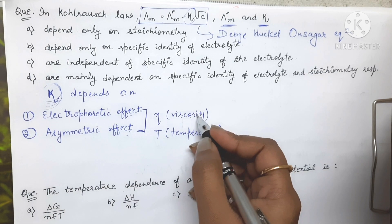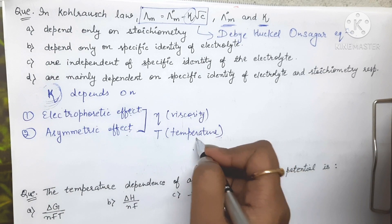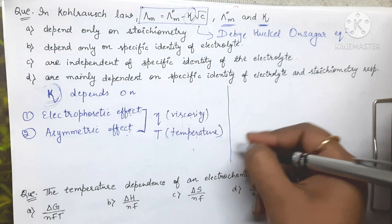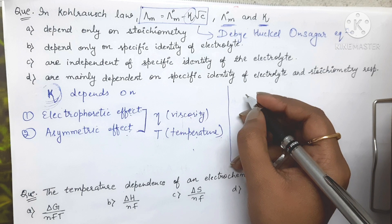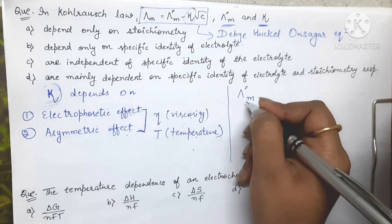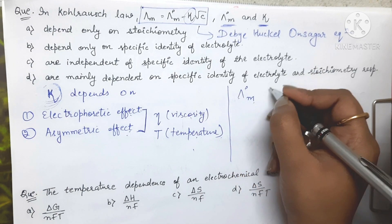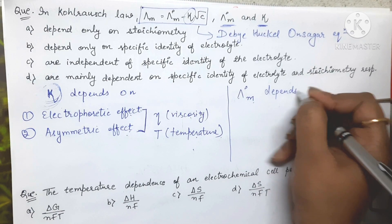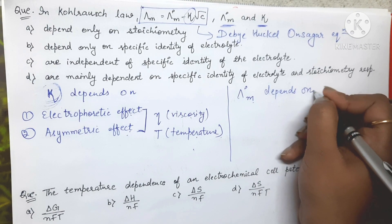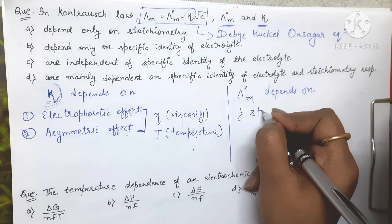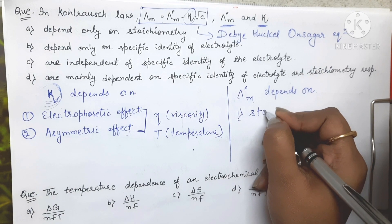Now if we talk about λ°m, this is the molar conductance at infinite dilution. λ°m depends on, first, the stoichiometry of the electrolyte.